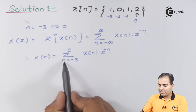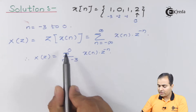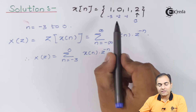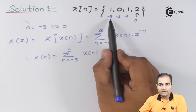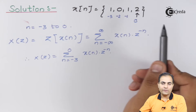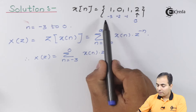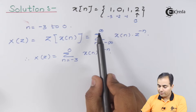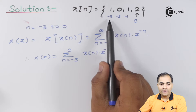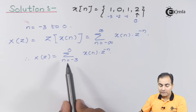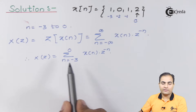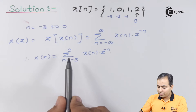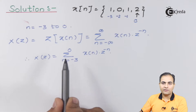The reason I substituted n from minus three to zero is that our function is available only in that range. The rest of the function has amplitude zero, so there is no need to include values outside that range. That is why I replaced the summation with n going from minus three to zero. Now we want to calculate X(z) by breaking up this summation.